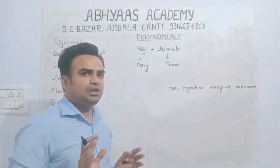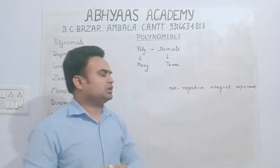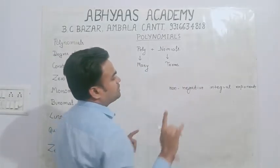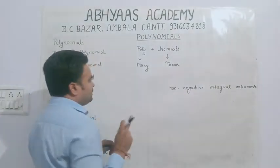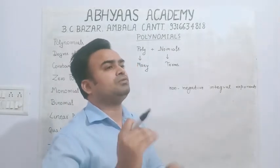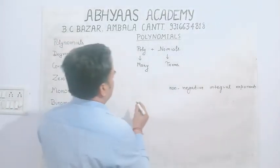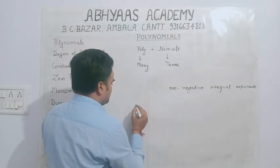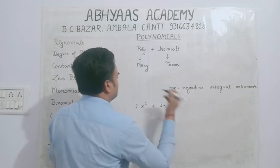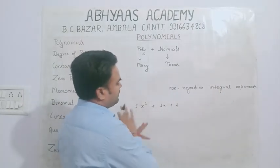In polynomials, power must not be negative. The other thing is integral exponents — the power can be 1, 2, 3, 4, 5. Powers like 1/2, 1/3, 2/3, 4/3, 4/5 are not allowed.